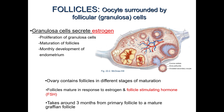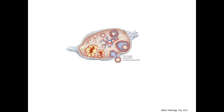These granulosa cells secrete primarily estrogen, which controls proliferation of the cells, helps with maturation of follicles, and is critical for the monthly development of the uterine endometrium, as discussed in the next video. Oocytes are formed by a process called oogenesis, which begins prenatally and is not completed until fertilization.